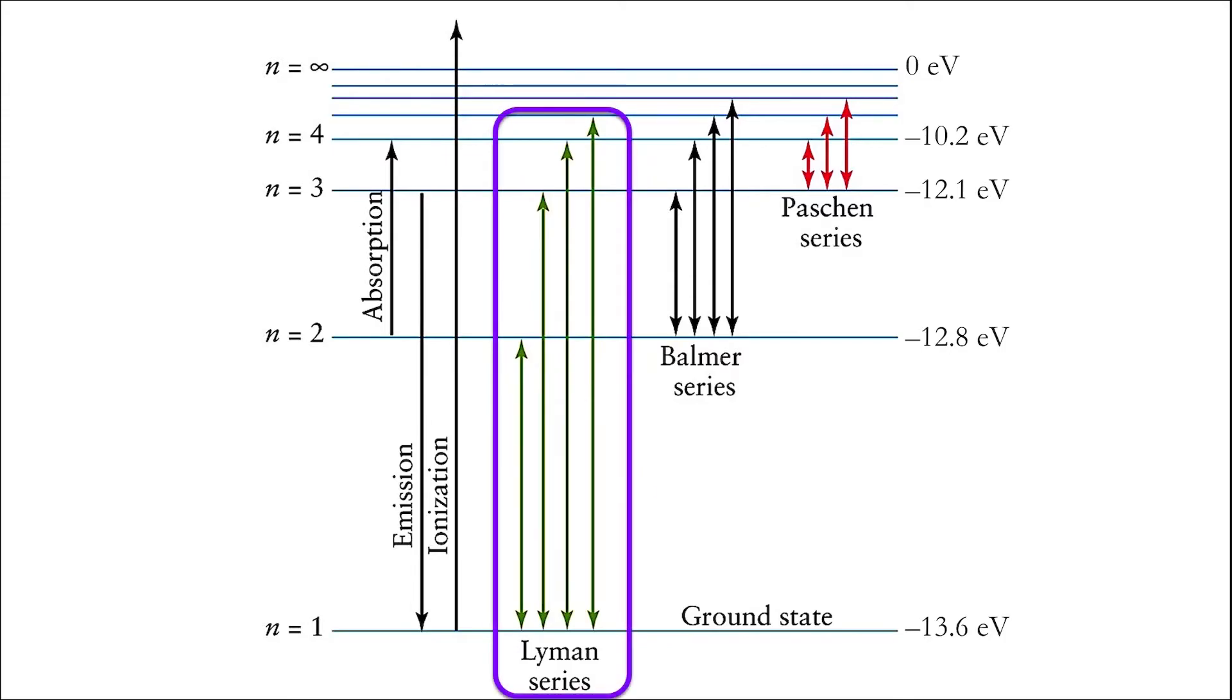The Lyman series, where electrons transition between the ground state and the first four excited states. The Balmer series, where electrons transition between the first excited state and the four excited states above it. And the Paschen series, where electrons transition between the second excited state and the four excited states above it.